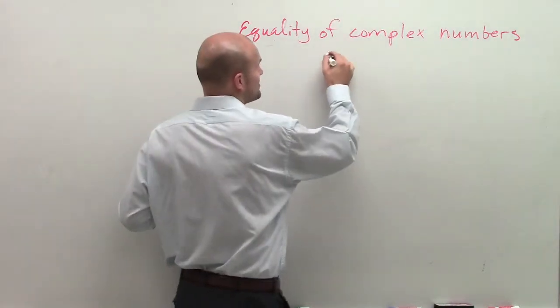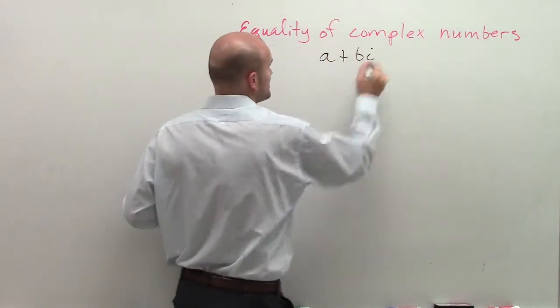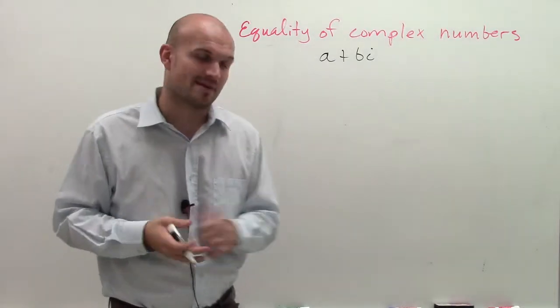Remember, complex numbers are just numbers that we can put in the form of a plus bi, where a is going to be a real part and bi is your imaginary part.